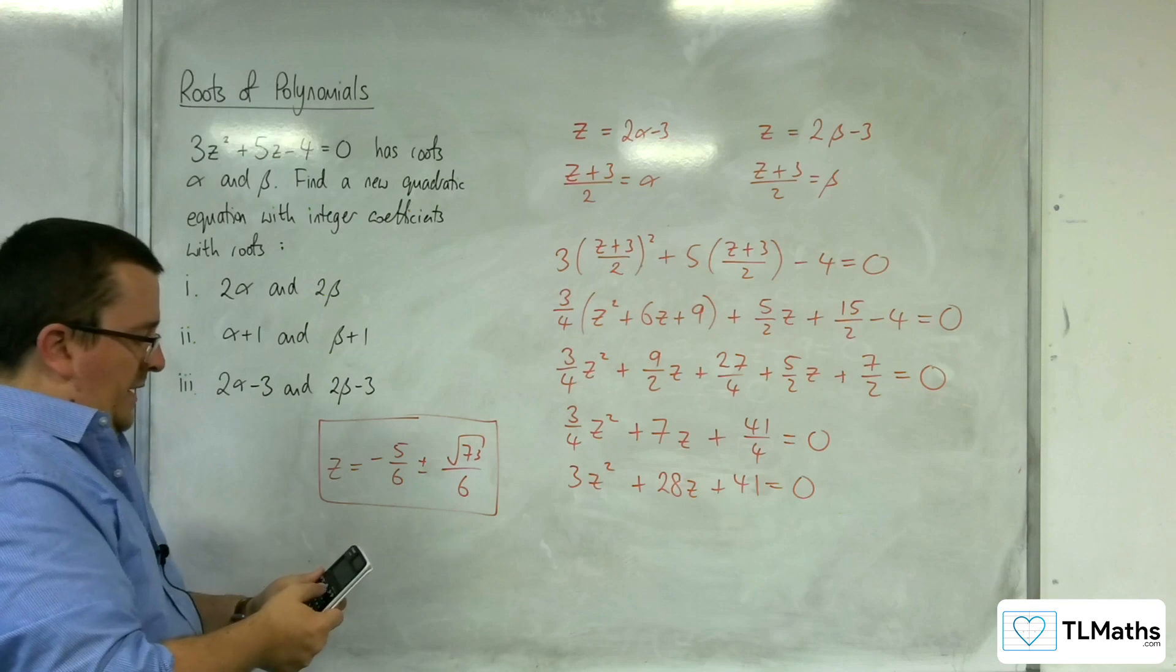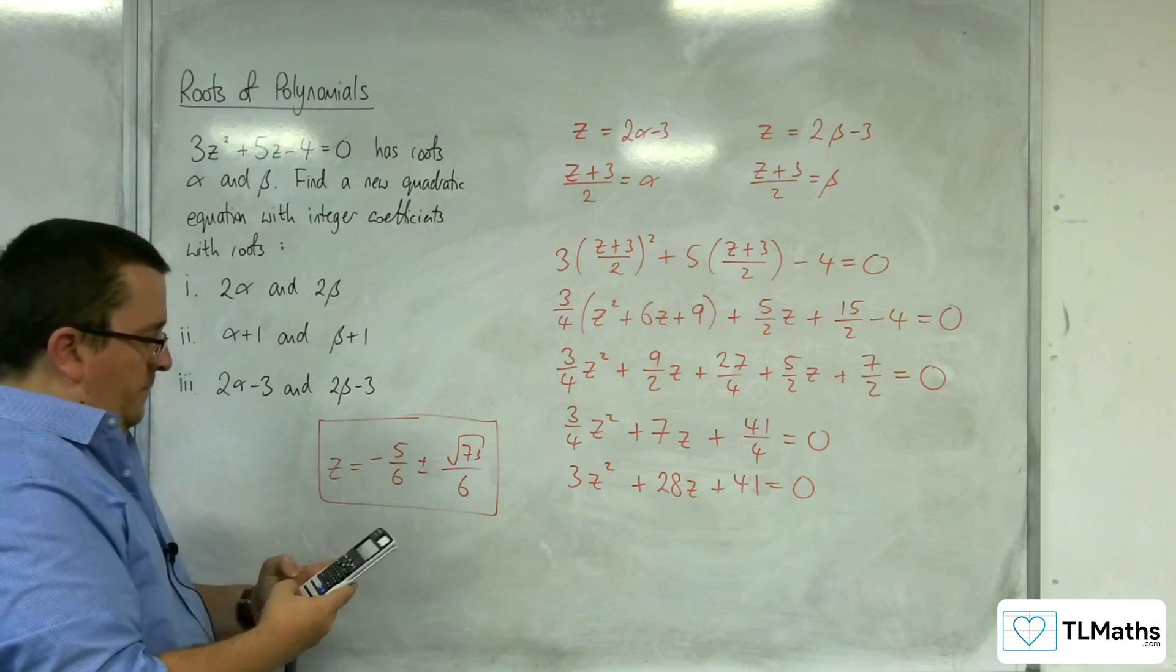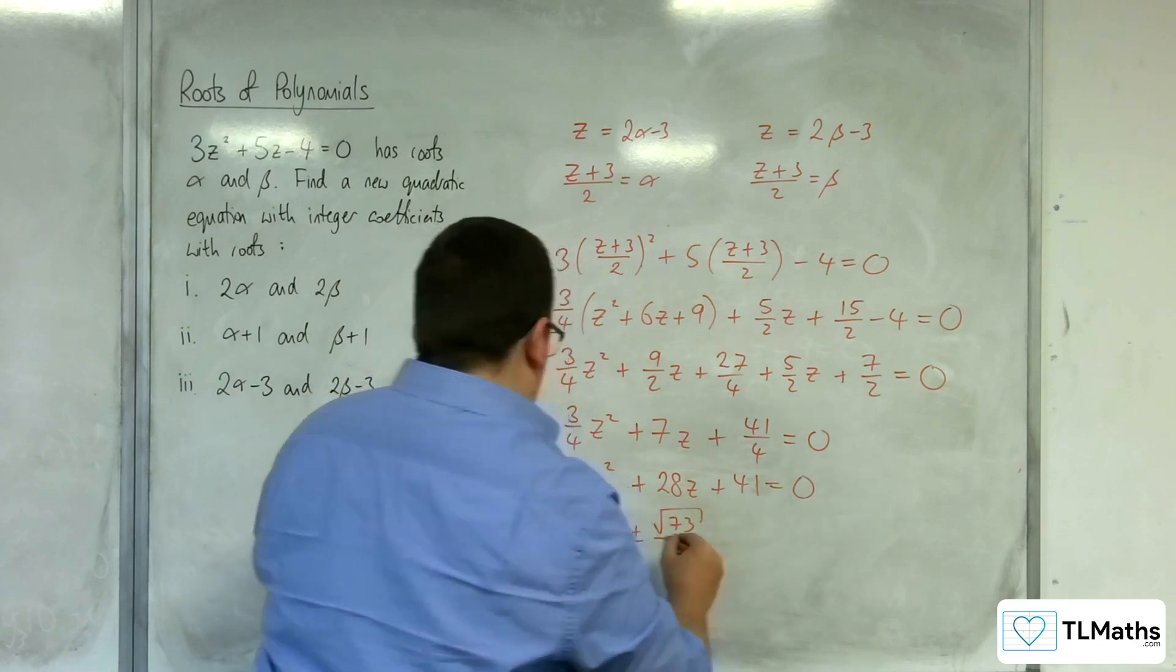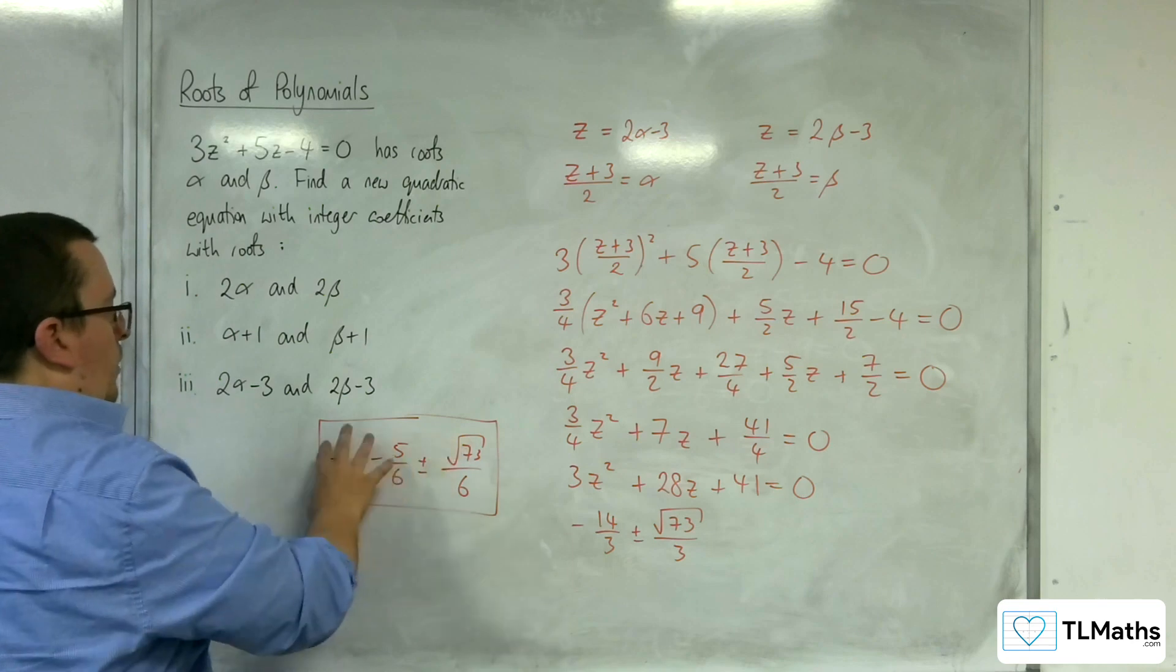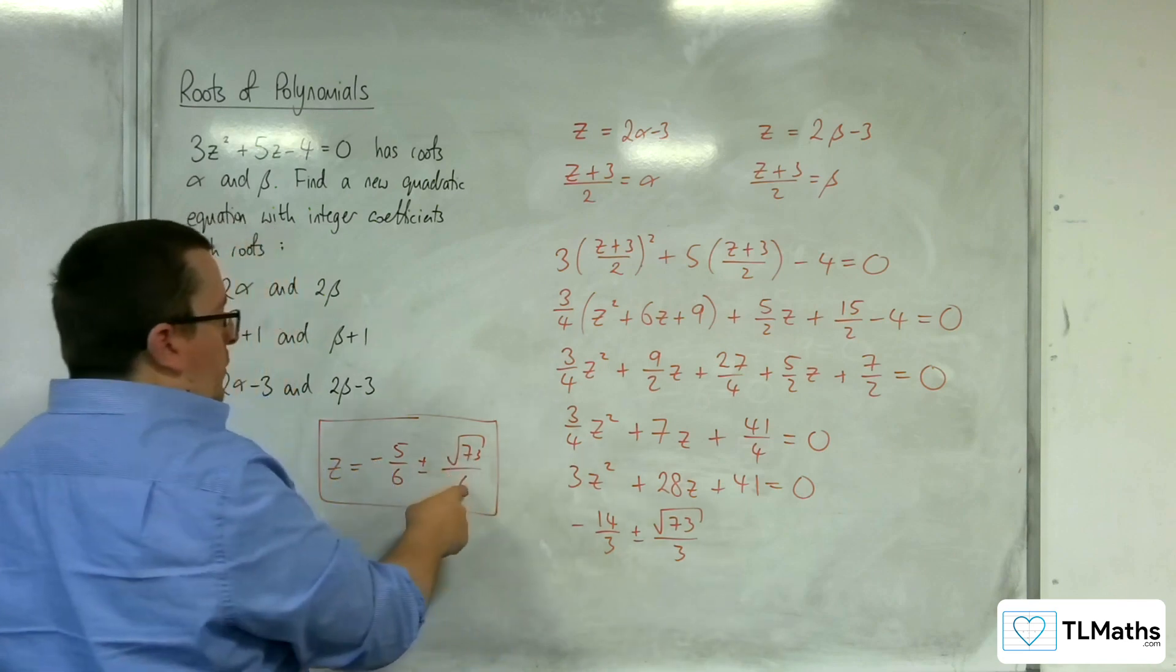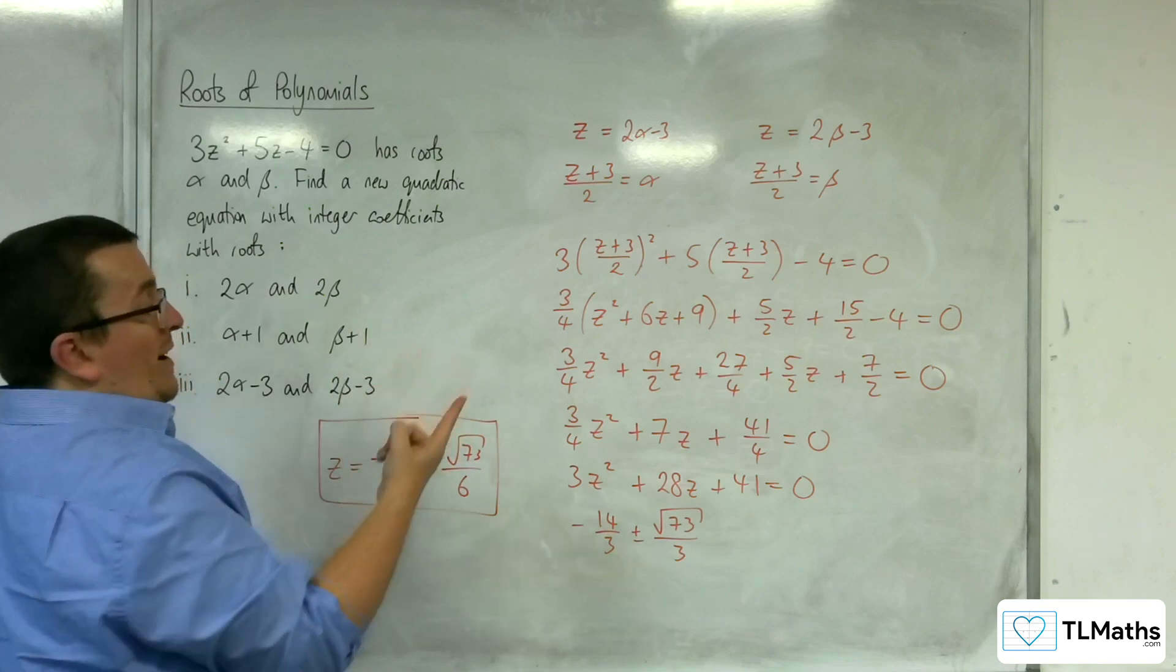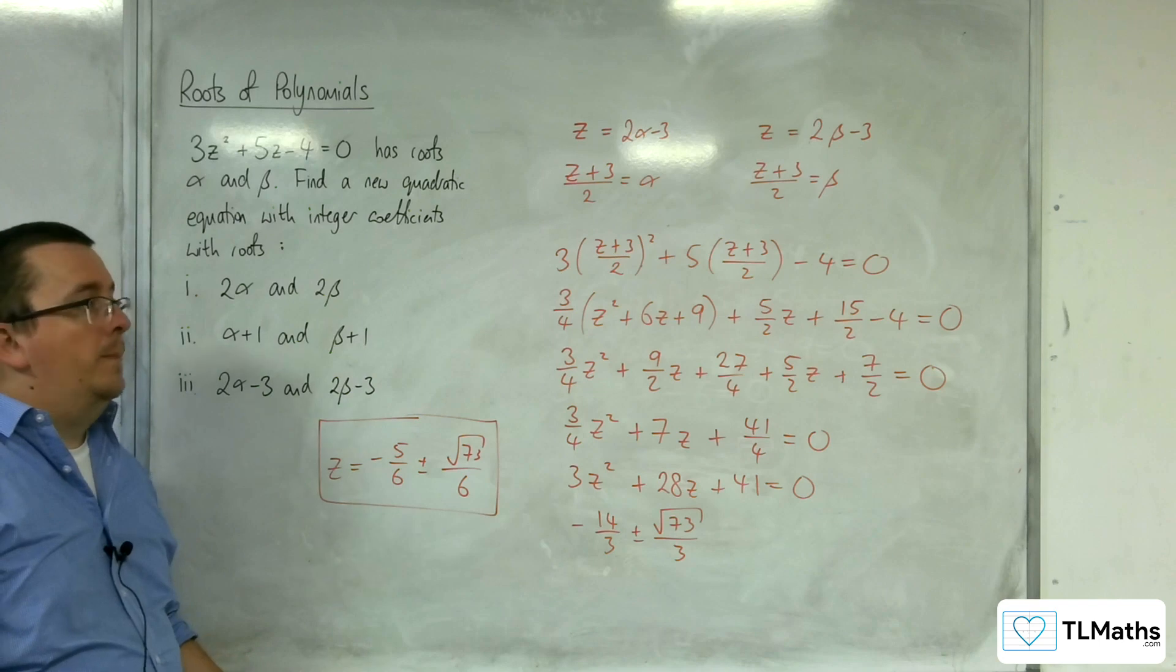So let's pop that into my equation solver just to see what I'm getting. So I'm getting minus 14 thirds plus or minus root 73 over 3. So I'm just using this as a double check to make sure it makes sense. So I'm multiplying all of that through by 2, which is going to get me the root 73 over 3, so that matches, and I'd get minus 5 thirds. And then I'm subtracting 3, so minus 5 thirds take away 9 thirds gets you down to the minus 14 thirds. And so that works out perfectly as well.